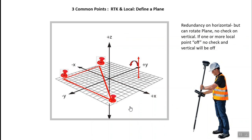If I hit a third point, it's like a three-legged stool. I have redundancy on the horizontal, but there's no redundancy on my vertical. The plane defined by these three points means that if one of these points was off, I'd have movement in that plane and thus issues with my vertical.